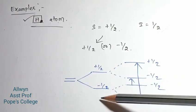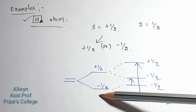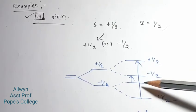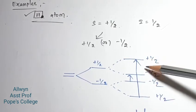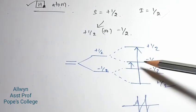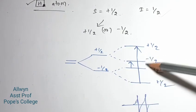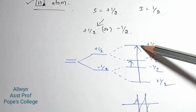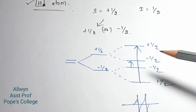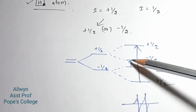In the absence of a magnetic field there is no splitting; when a magnetic field is applied, hyperfine splitting occurs. The selection rule gives minus half to minus half = 0 and plus half to plus half = 0, so we get 2 signals.